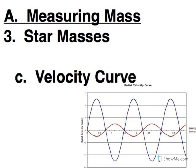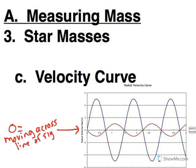So what a velocity curve shows us is this difference in speeds of the two stars. So this is radial velocity. So zero means that it's moving across the line of sight. Positive is moving away.